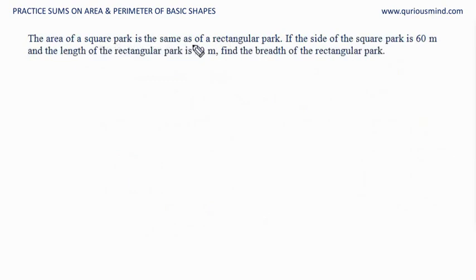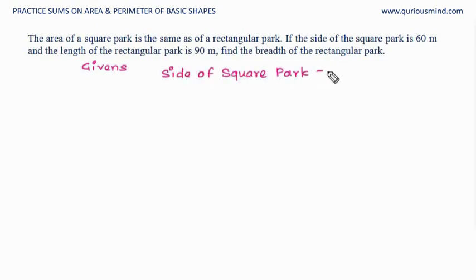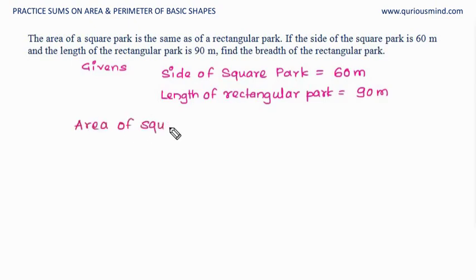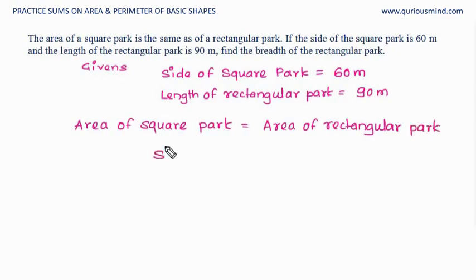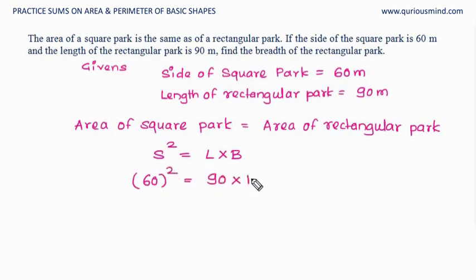The area of a square park is the same as that of a rectangular park. The side of the square park is 60 meters and the length of the rectangular park is 90 meters. Find the breadth of the rectangular park. The areas are equal. Area of square park is side squared, and area of rectangular park is length into breadth. Side is 60 meters, so it is 60 squared. Length is 90 meters, and we don't know the breadth.